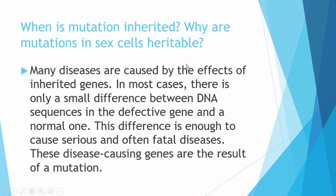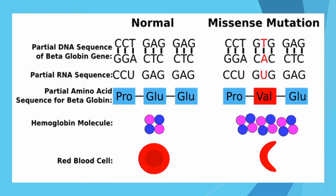When is a mutation inherited? Why are mutations in sex cells heritable? Many diseases are caused by the effects of inherited genes. In most cases, there is only a small difference between the DNA sequence in the defective gene and a normal one, but this difference is enough to cause serious and often fatal diseases. These disease-causing genes are the result of mutations, and sometimes these mutations in the genes may be passed from one generation to the next if present in gametes. This diagram shows changes in the sequence of bases in normal hemoglobin and one affected by mutation — an example of a recessive gene causing sickle cell anemia.